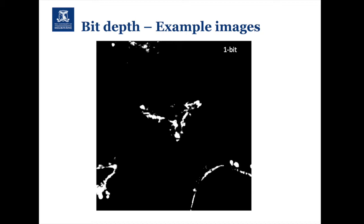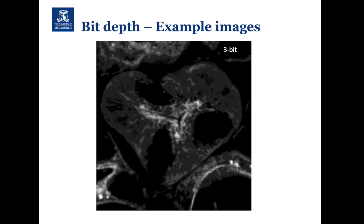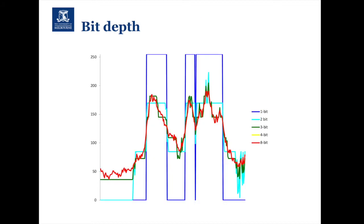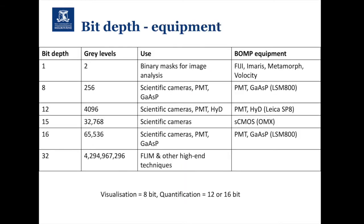Another example: we take an actual microscope image and present it as a one-bit image — either zero intensity or maximum intensity — then a 2-bit, 3-bit, 4-bit, and finally an 8-bit image. You can see with each step we're seeing more and more information. If we take a line profile of the intensity along the yellow line in the image — again something we'll do in the Fiji quantification workshop — we can see that as bit depth increases we're getting a lot more quantitative information. In the one-bit image it's either 0 or 255; by the time we get to 8-bit you can see a lot of detail.